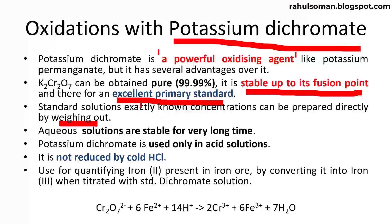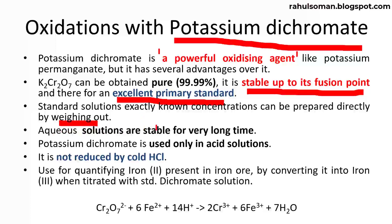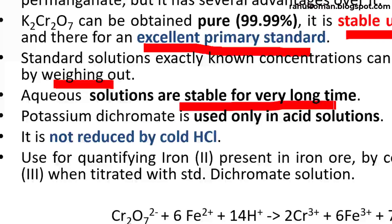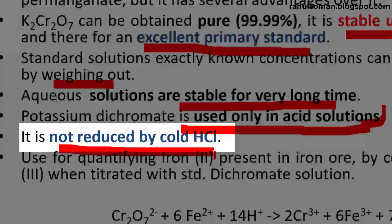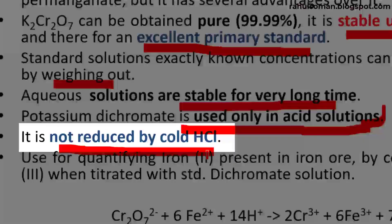Potassium dichromate is an excellent primary standard. These solutions are stable for a very long time, and potassium dichromate is used only in acid solutions — these titrations are performed only in acid medium. It will not be reduced by cold HCl; however, boiling HCl can liberate chlorine. Therefore, HCl is not much preferred as the acid here, though it is possible to use it in cold HCl conditions.